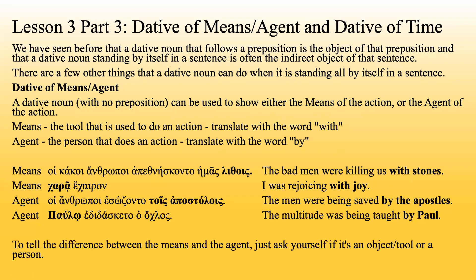To tell the difference between means and agent, just ask yourself: is it an object/tool, or is it a person? If it's an object tool, it's means. If it's a person, it's agent.